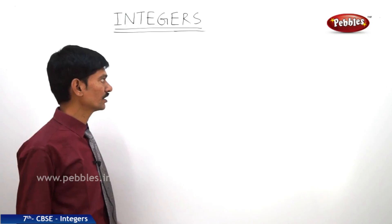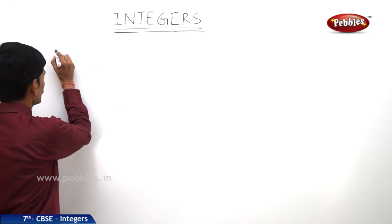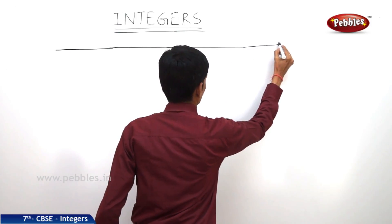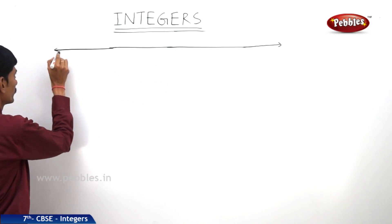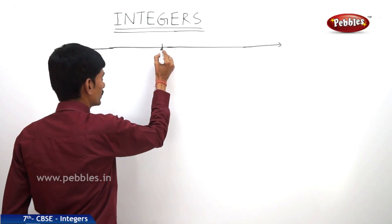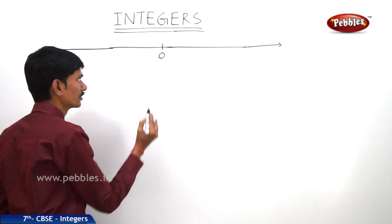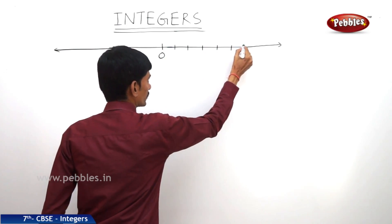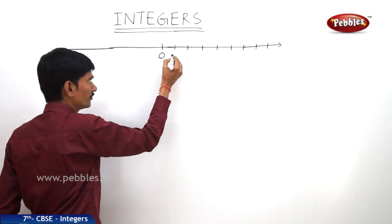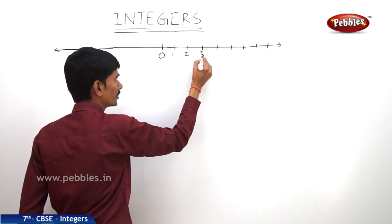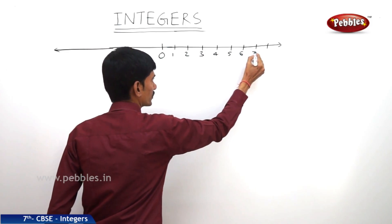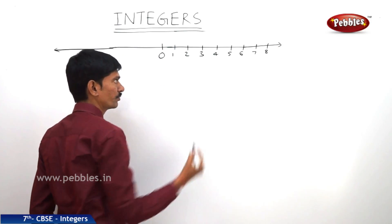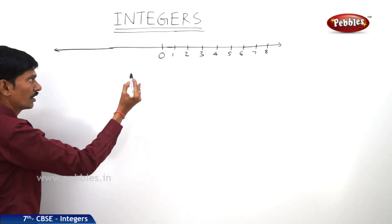Now let us see how to represent integers on the number line. First we take a number line. On this number line we first mark 0, which is neither positive nor negative. To the right of 0, with equal intervals, we represent positive integers starting from 1, 2, 3, 4, 5, 6, 7, 8 and so on. The arrow mark represents that there are infinitely many positive integers to the right of 0.